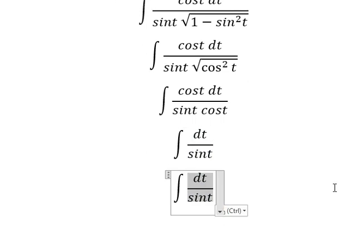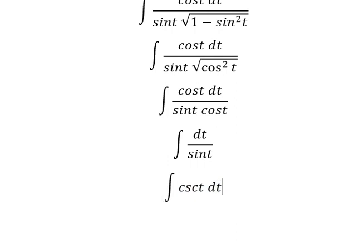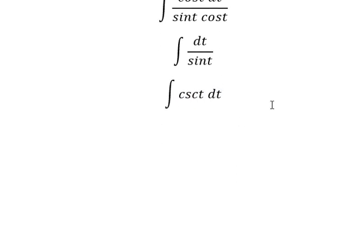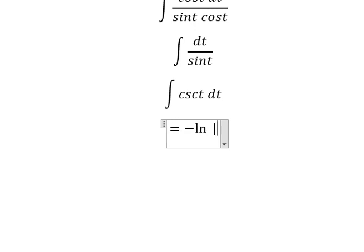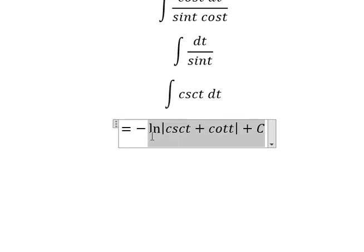This simplifies to cosecant of t dt. The integration of this gives us negative ln of the absolute value of cosecant(t) plus cotangent(t), plus C.